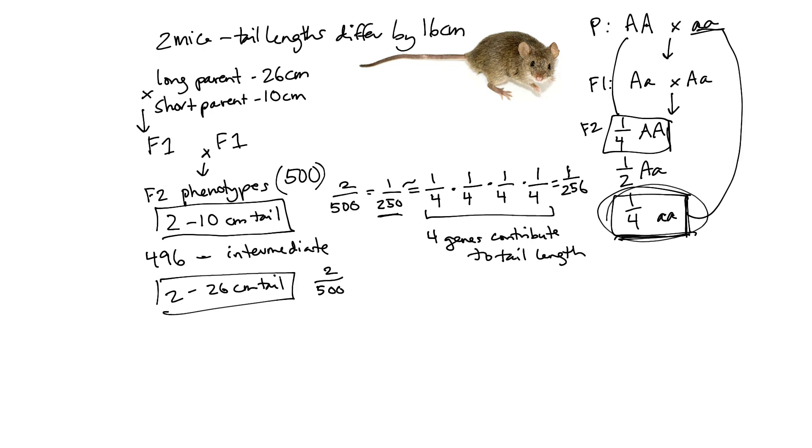We could do the same calculation with the other parent, where we consider this to be about one out of 250. And that's the same as one gene being homozygous, a second, a third, and a fourth gene, all being big A, big A, big B, big B, big C, big C, big D, big D. It's going to be a pretty rare genotype, and it's going to occur about one out of 250 or two out of 500 offspring. There are four genes contributing to tail length in these mice.